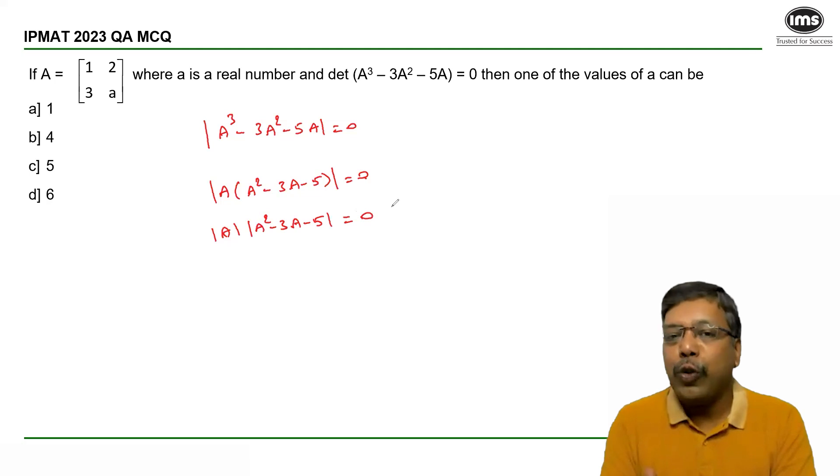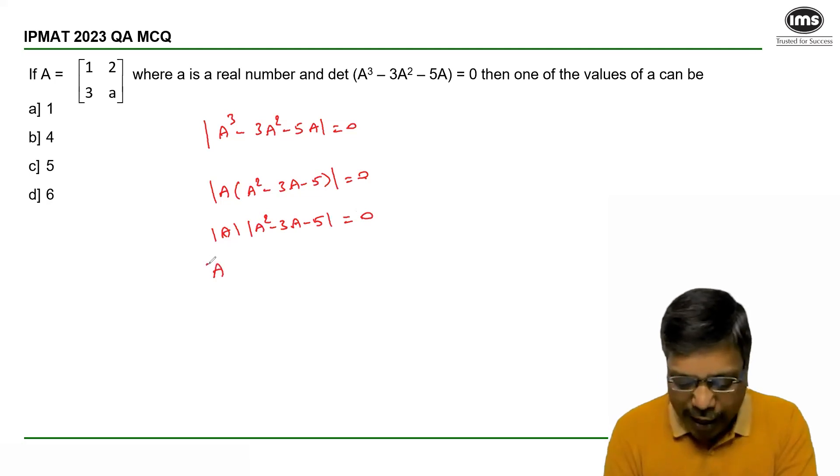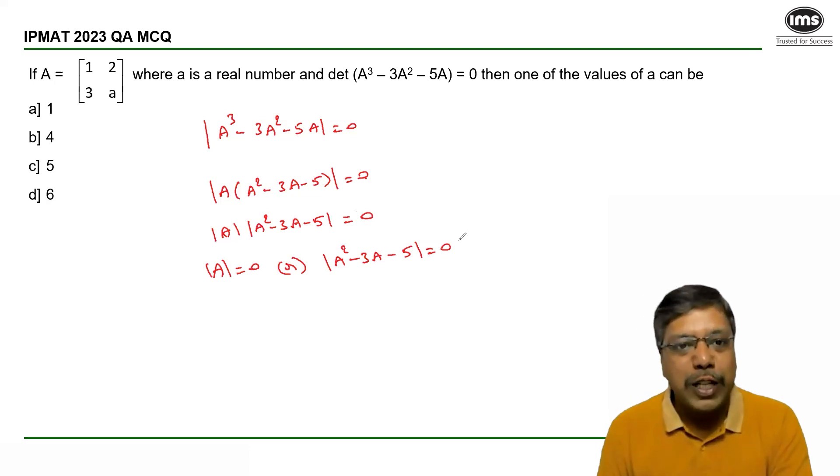Product of two numbers will be 0 when either of them are equal to 0. So either determinant A is equal to 0 or determinant (A² - 3A - 5I) is equal to 0.